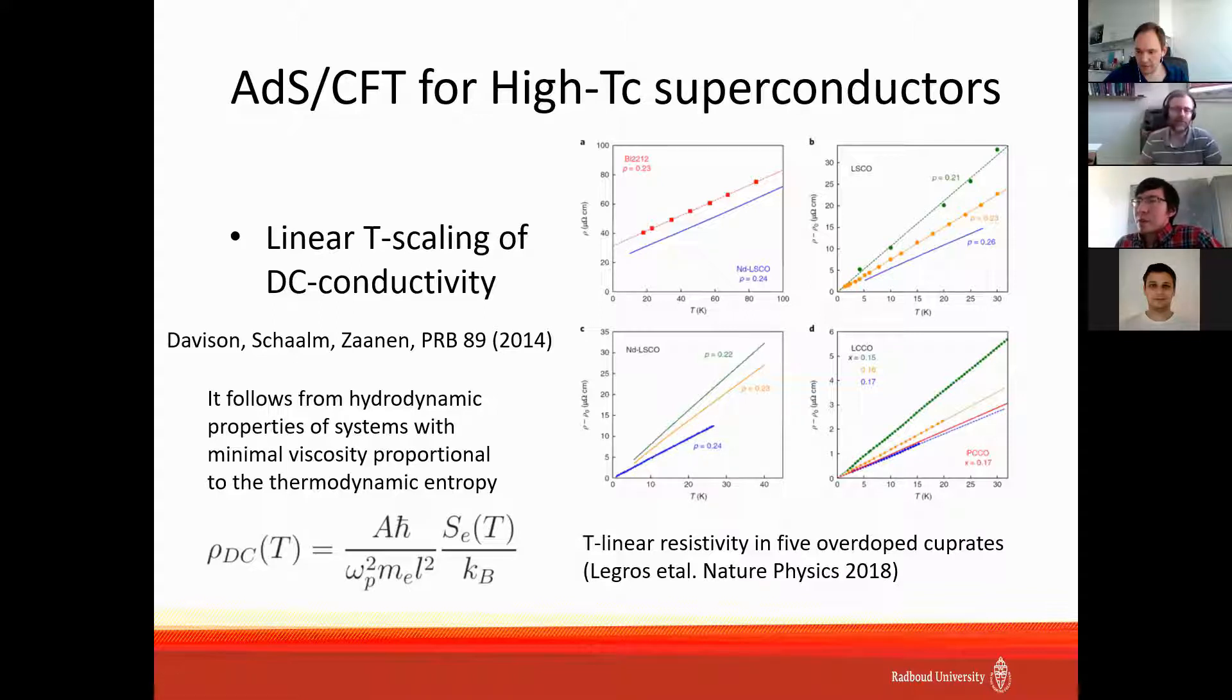The correspondence provides explanation in the normal states of cuprates relating to the general hydrodynamic properties of the system, which say that minimal viscosity is proportional to the entropy of the system. This entropy can be described as the entropy of black hole, and with other assumptions we obtain linear dependence for the resistivity.